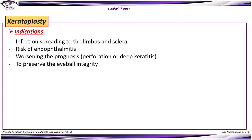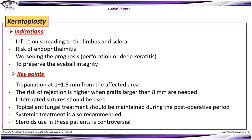Keratoplasty indications include infection spreading to the limbus and sclera, risk of endophthalmitis, worsening prognosis such as perforation or deep keratitis, and to preserve eyeball integrity. Key points: trephination at 1 to 1.5 mm from the affected area should be performed; the risk of rejection is higher when grafts larger than 8 mm are needed; interrupted sutures should be used; topical antifungal treatment should be maintained postoperatively; systemic treatment is also recommended; and steroid use in these patients is very controversial.